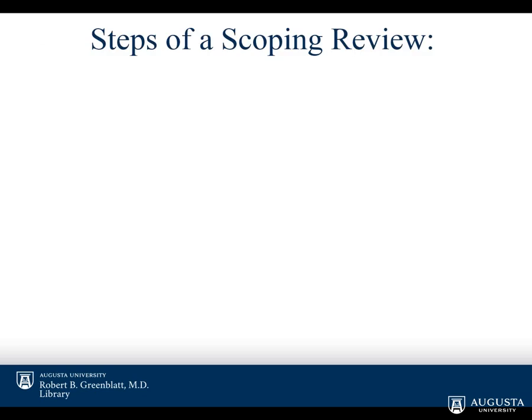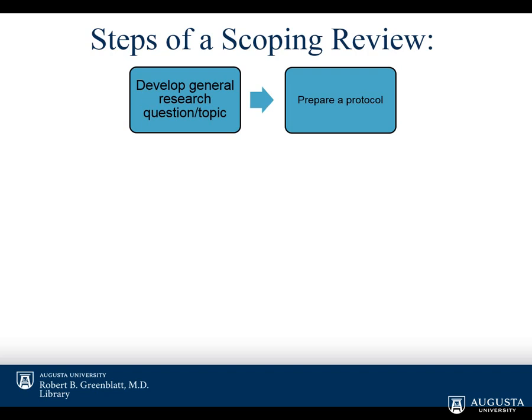Returning to the steps of the scoping review: after developing a research question and preparing a protocol, the next step is selecting your inclusion and exclusion criteria. You can be somewhat general here given the broader nature of the research question. Some criteria, like age of the population or language of the published article, would not be included in your search string. Your librarian is happy to help with developing the research question, inclusion and exclusion criteria, the literature search, and beyond.